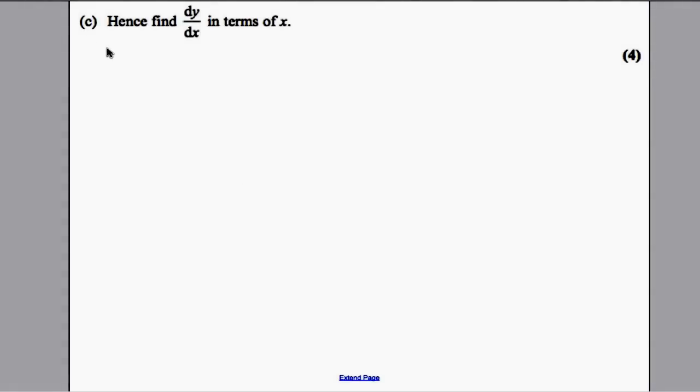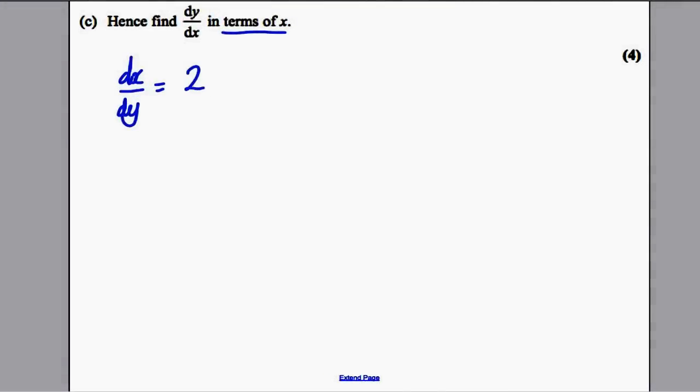And then part C says, hence find dy by dx in terms of x. Now, we know that dx by dy, we just said, is 2 sec 2y tan 2y.